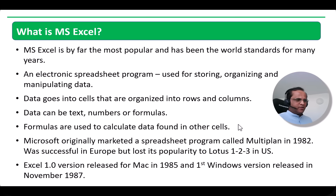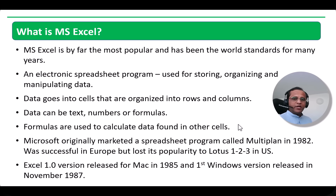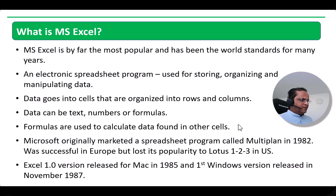After Multiplan failed, Microsoft launched Excel. The first version was known as Excel 1.0, and very surprisingly it was released for the Apple Macintosh — not for Windows. The first version was for Mac users and was launched in 1985. The first Windows version was released in November 1987, so almost two years later the Windows version of Microsoft Excel was launched.